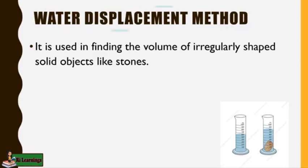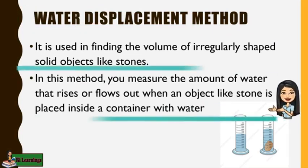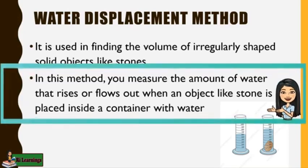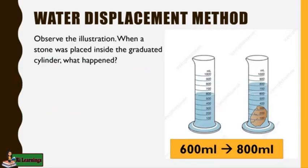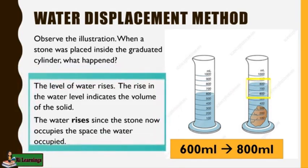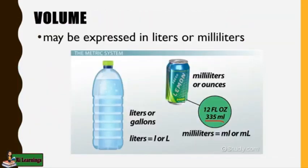What if you want to find the volume of irregularly shaped solid? What will you use? Very good. You will use the water displacement method. In this method, you measure the amount of water that rises or flows out when an object like stone is placed inside a container with water. Observe the illustration. When stone was placed inside the graduated cylinder, what happened? Very good. The level of water rises. The rise in the water level indicates the volume of the solid. The water rises since the stone now occupies the space the water occupied. Volume may be expressed in liters or milliliters.